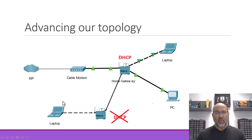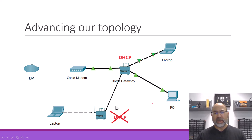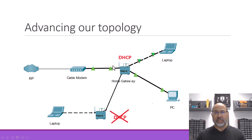Now, if this is a wireless home gateway down here — or just another router — I would absolutely turn DHCP off on one of these nodes and just run it on the other one. That way, even this laptop here, because this lower wireless home gateway is acting as just maybe an access point or a set of switch ports, it's getting an IP address from my main home gateway.